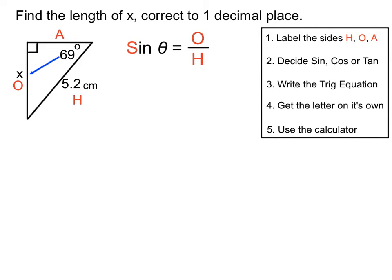Sine theta equals opposite over hypotenuse. We're going to substitute all the numbers from this triangle. Sine 69 degrees equals x over 5.2 — the x is in the opposite position on top, and 5.2 is the hypotenuse on the bottom. So we've filled in that sine arrangement with all the numbers from this particular question.